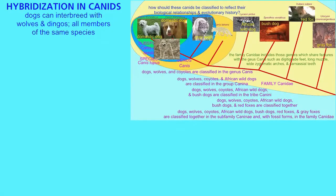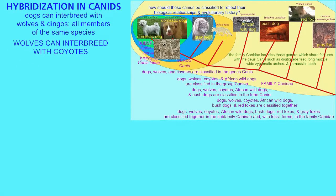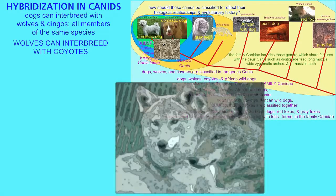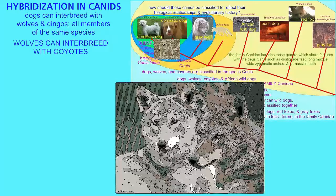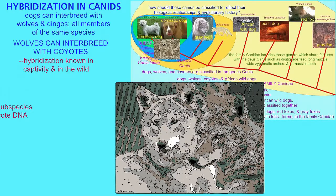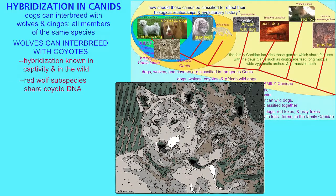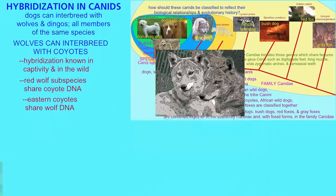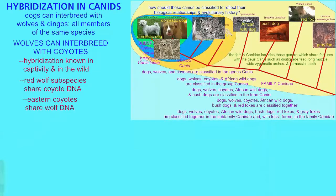He used the fact that interbreedings are known between wolves and coyotes in both captivity and the wild. We now know that red wolves, a subspecies of wolf, typically have some coyote DNA, and the eastern coyote spreading throughout the northeastern United States has some wolf DNA — evidence of hybridization and thus shared ancestry.